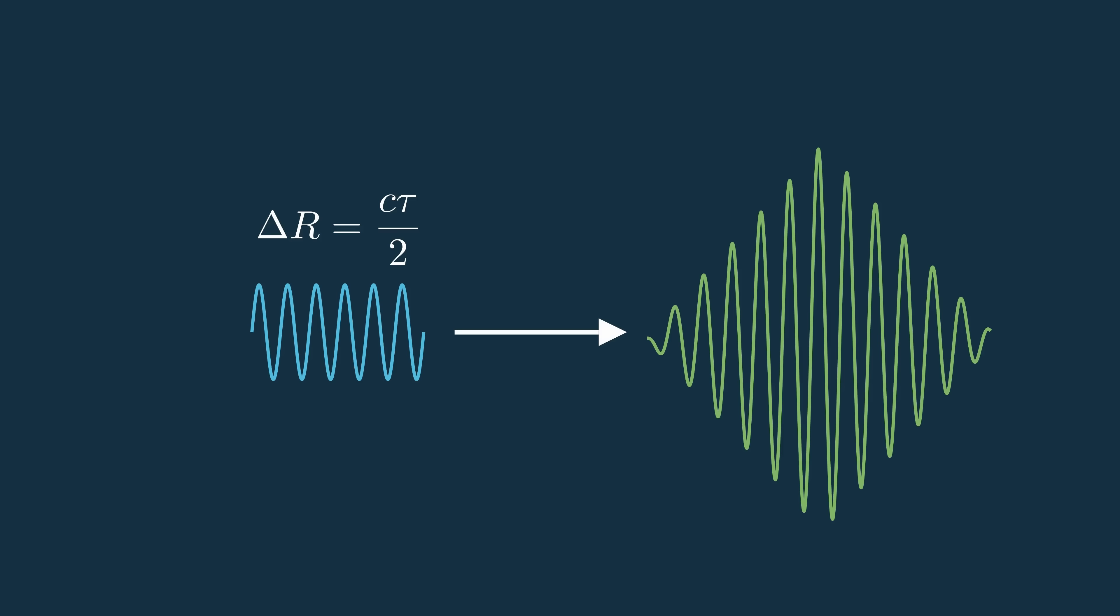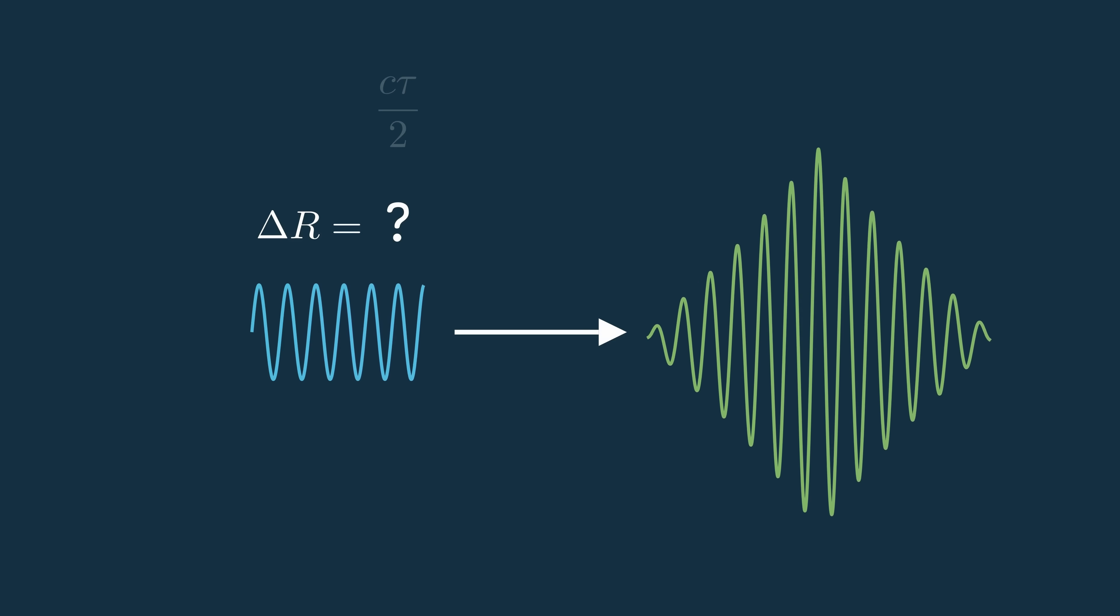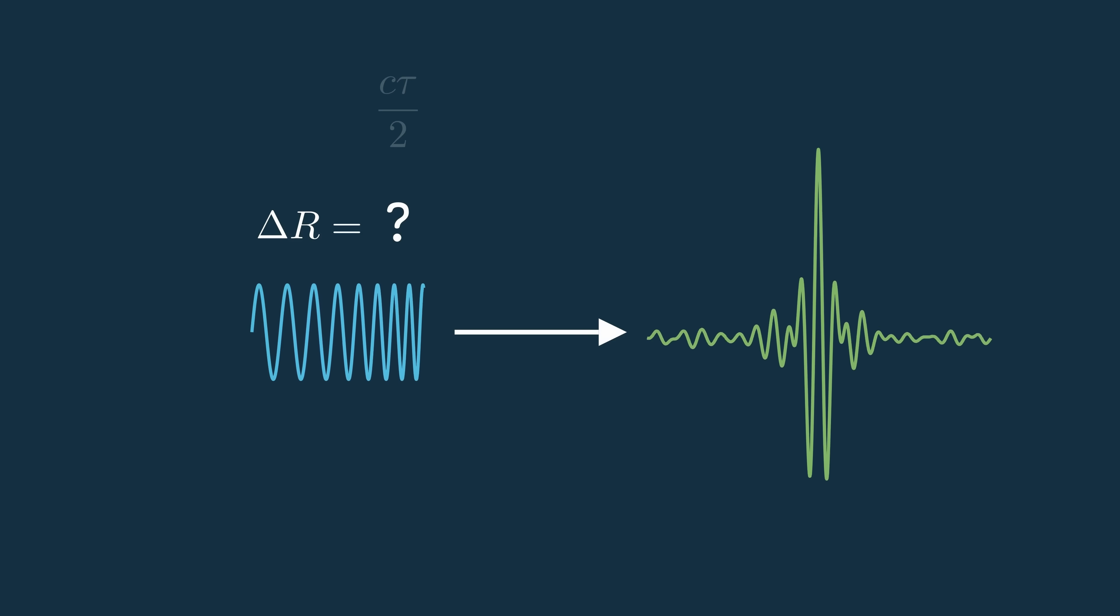With a pure tone, the correlation looks just like a triangle riding on a sine wave. Lots of oscillations even when the signals only partially overlap. But as we widen the signal's bandwidth, those oscillations cancel out more and more outside the main overlap.